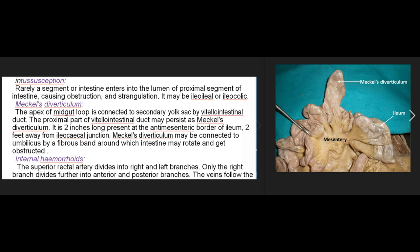Meckel's diverticulum: the apex of the midgut loop is connected to the secondary yolk sac by the vitello-intestinal duct. The proximal part of this duct may persist as Meckel's diverticulum — it is 2 inches long, present at the antimesenteric border of the ileum, 2 feet away from the ileocaecal junction. It may be connected to the umbilicus by a fibrous band around which the intestine may rotate and become obstructed.